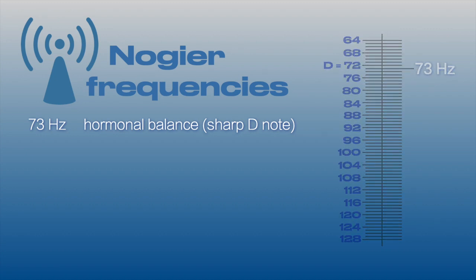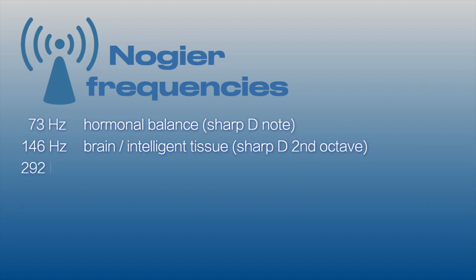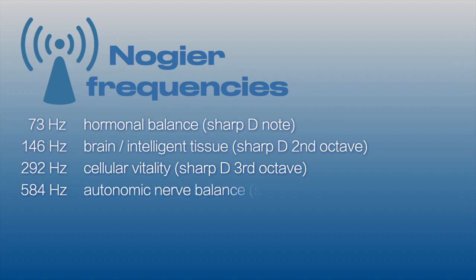The next Nogier frequency is 146 Hz, which is the next octave of the first, as 73 doubles to 146 Hz, and so on, as each Nogier frequency is a subsequent octave of the one before.